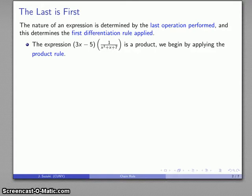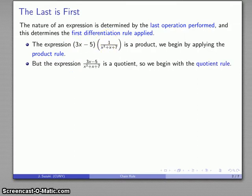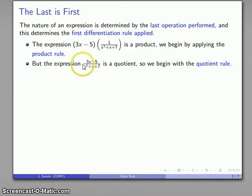One useful thing to keep in mind is that while this expression is a product, I could actually change the operation by a very minor algebraic shift. If I recognize this as a thing times a fraction, I can multiply the two things together, giving exactly (3x − 5) / (x³ + x + 7). In that case, the last thing I would do is divide two things, so what I have is a quotient, and I would start with the quotient rule. Which one we start with depends on how we write the expression.